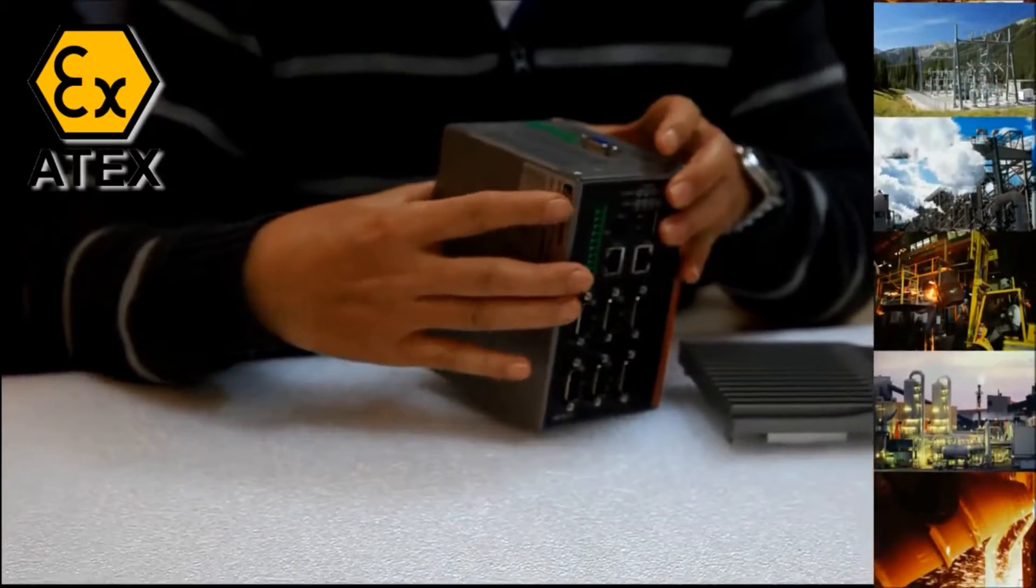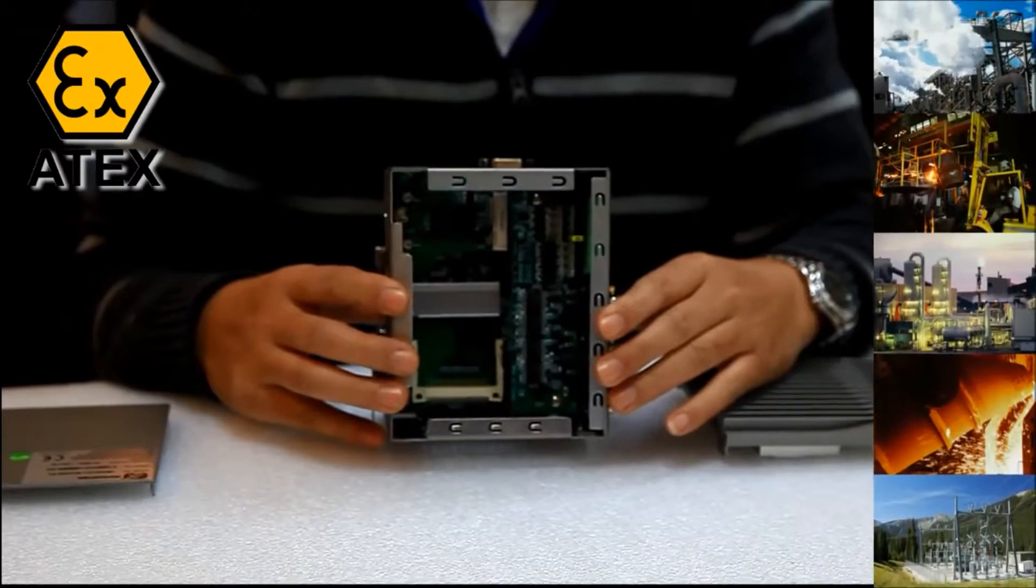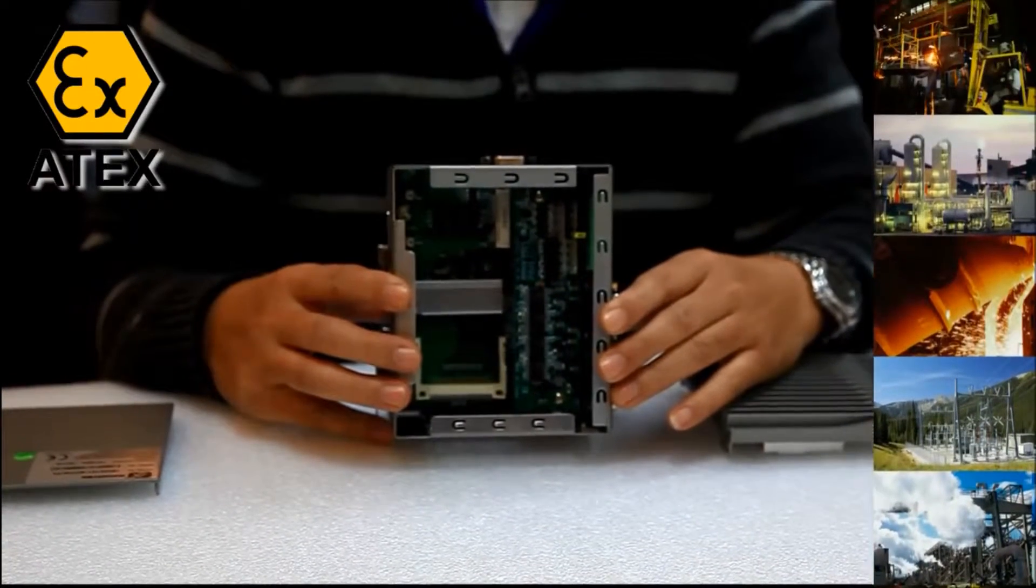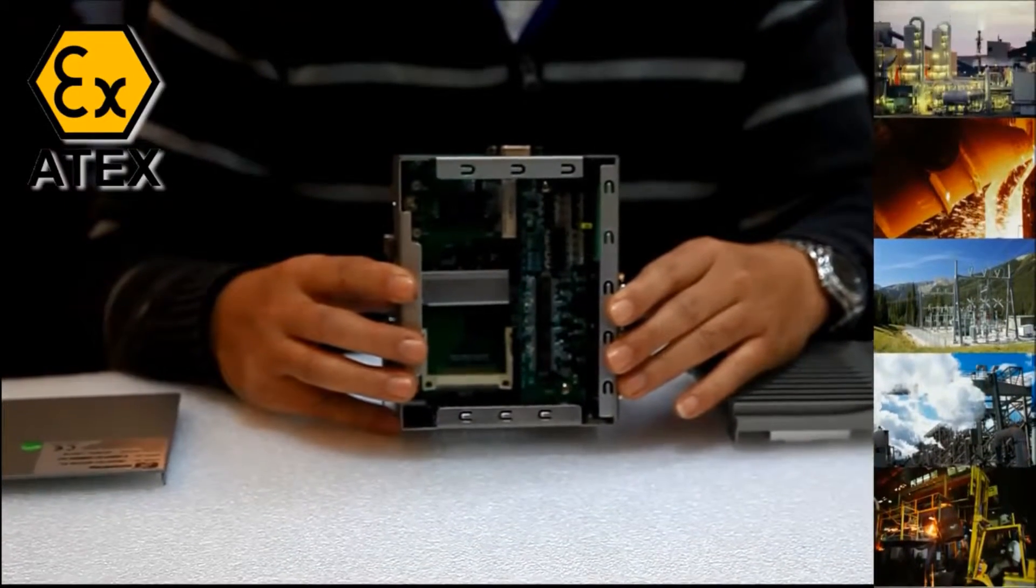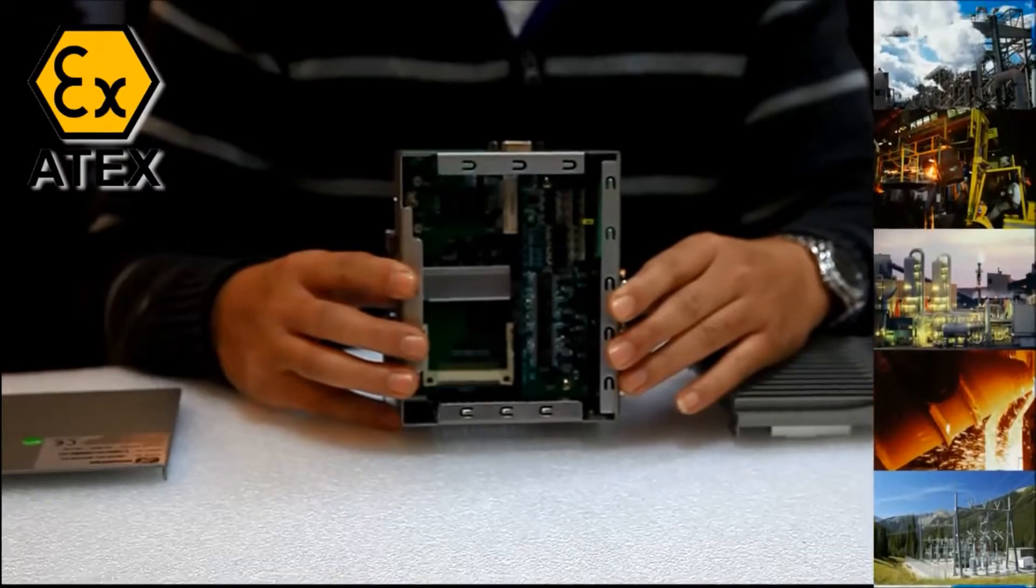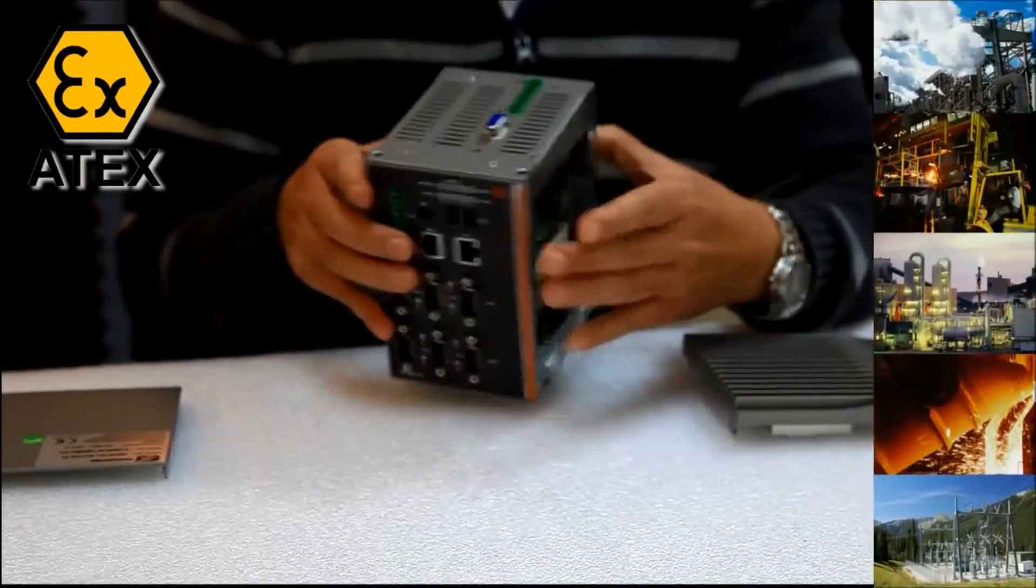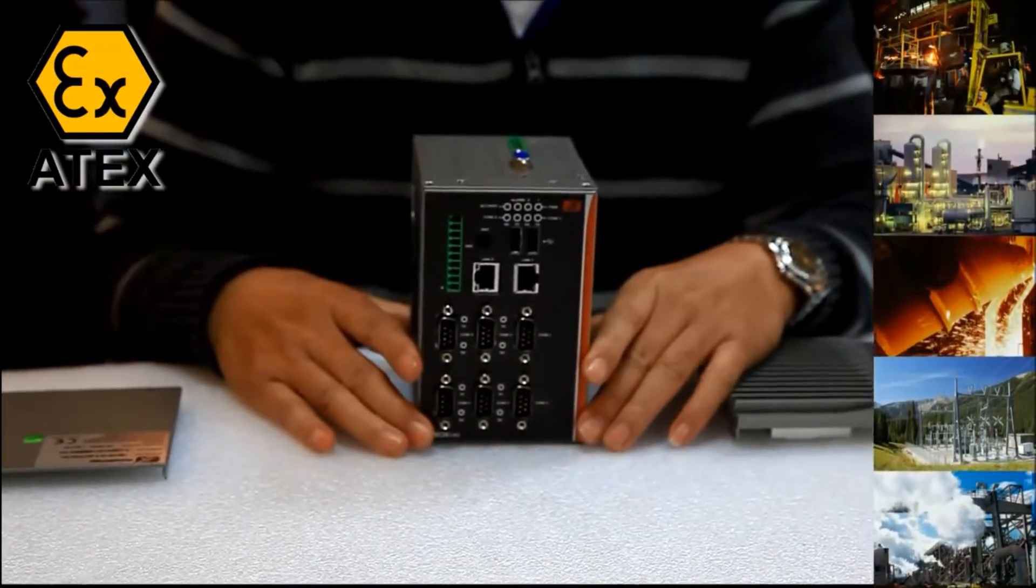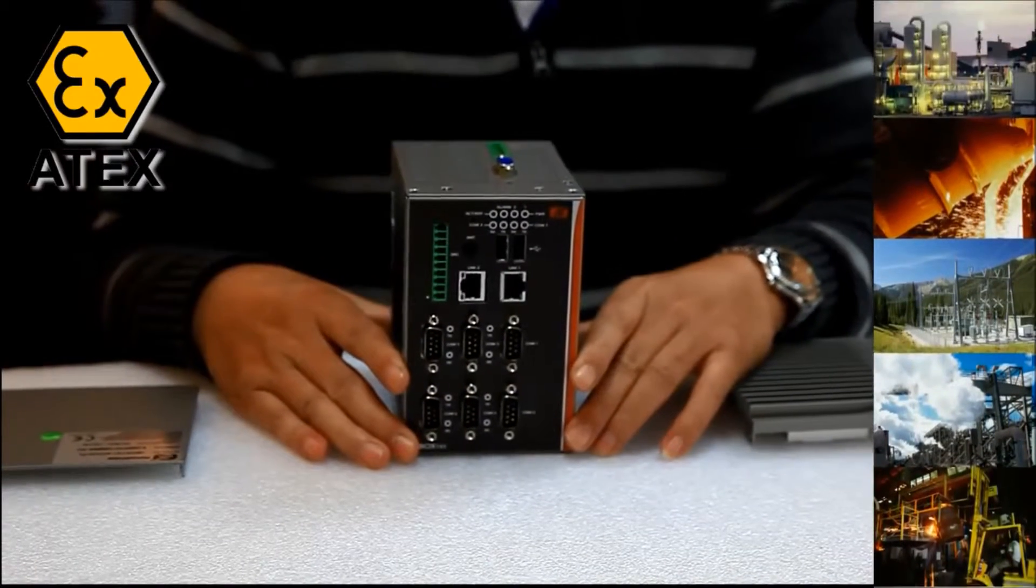Inside the box, there is one CF socket, one PCI Express mini-card slot, and one SIM card socket for 3G, GPRS, or Wi-Fi wireless connection to provide great data communication and expansion capability. The fanless and cable-less design increases reliability, extends MTBF, and ultimately reduces maintenance efforts.